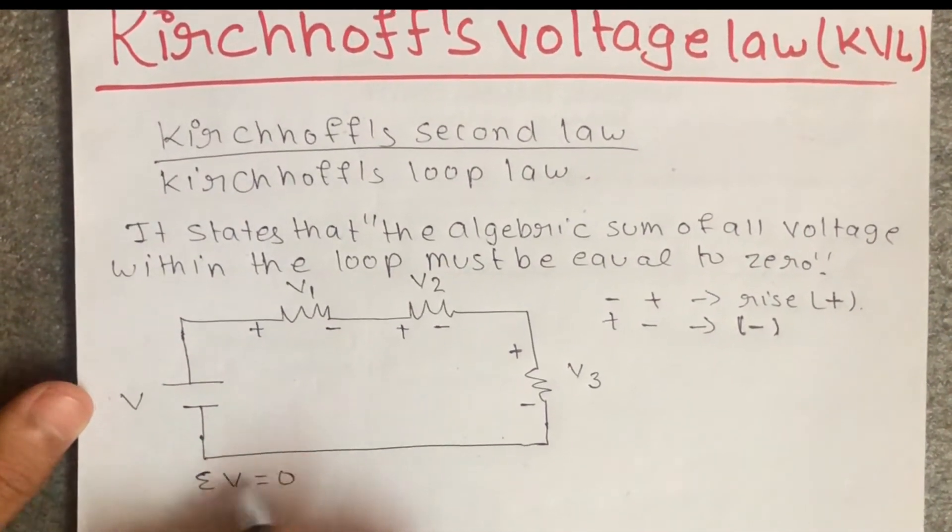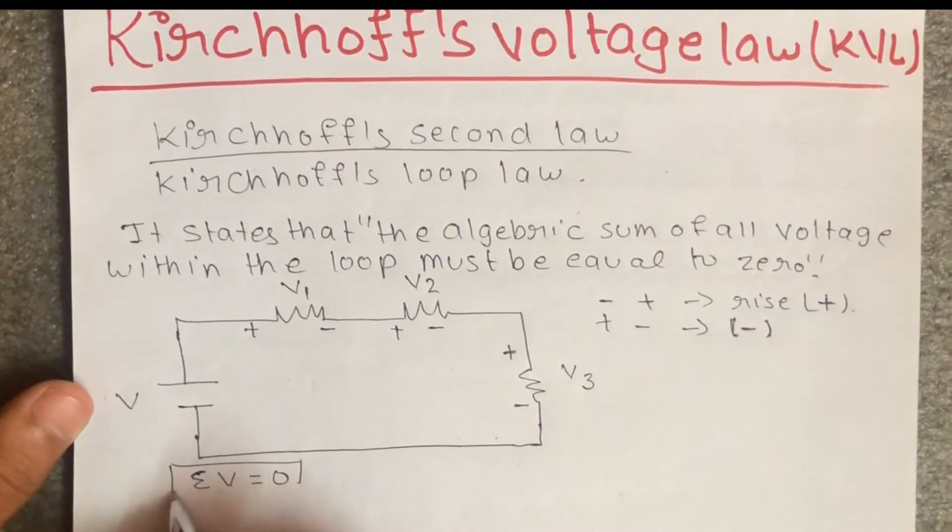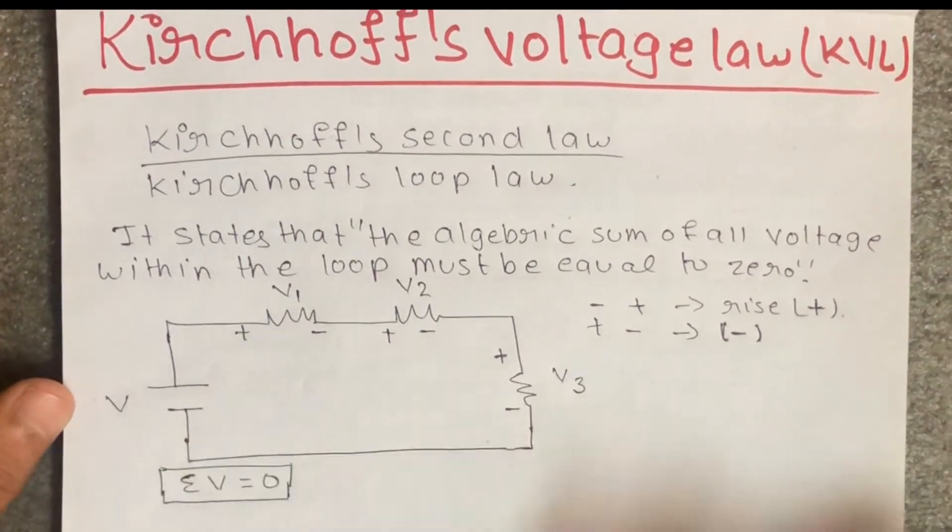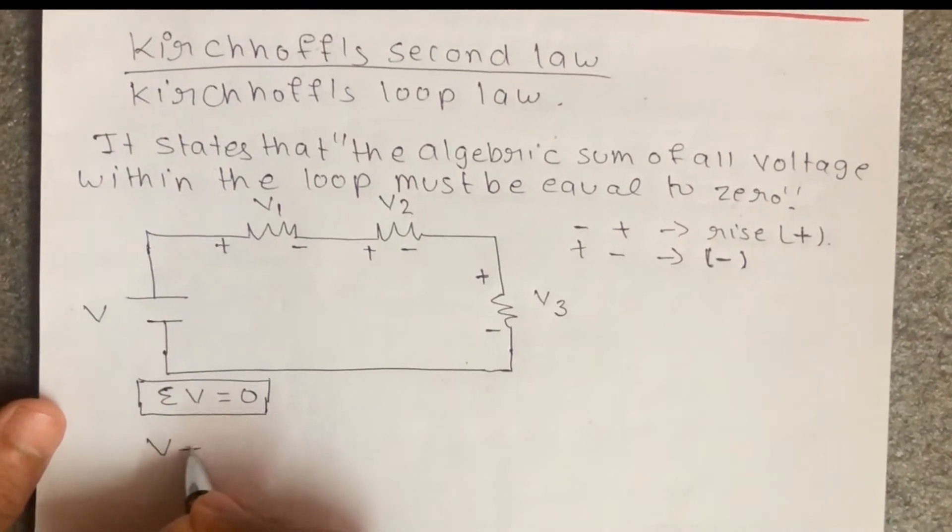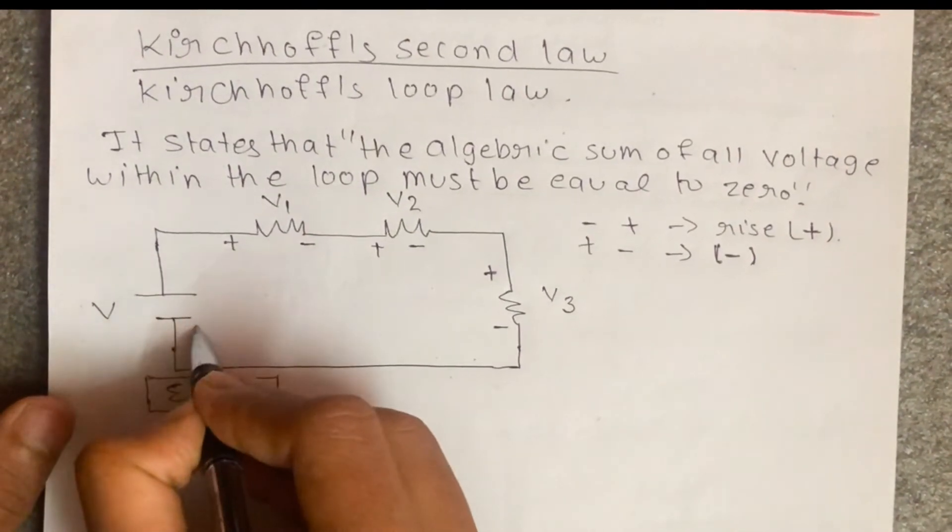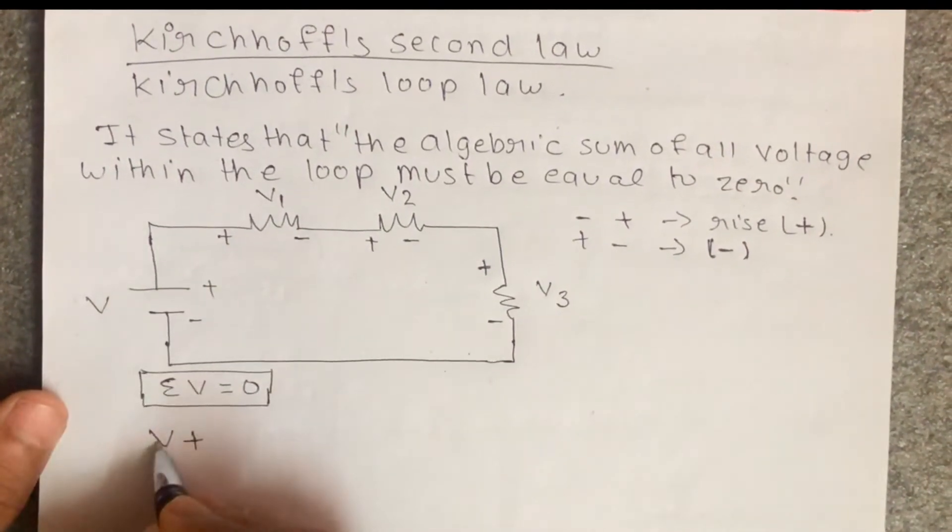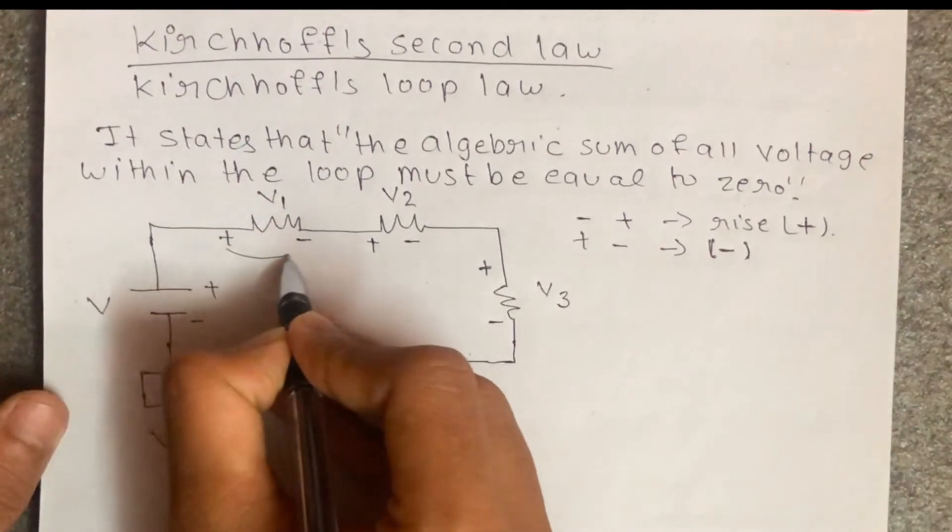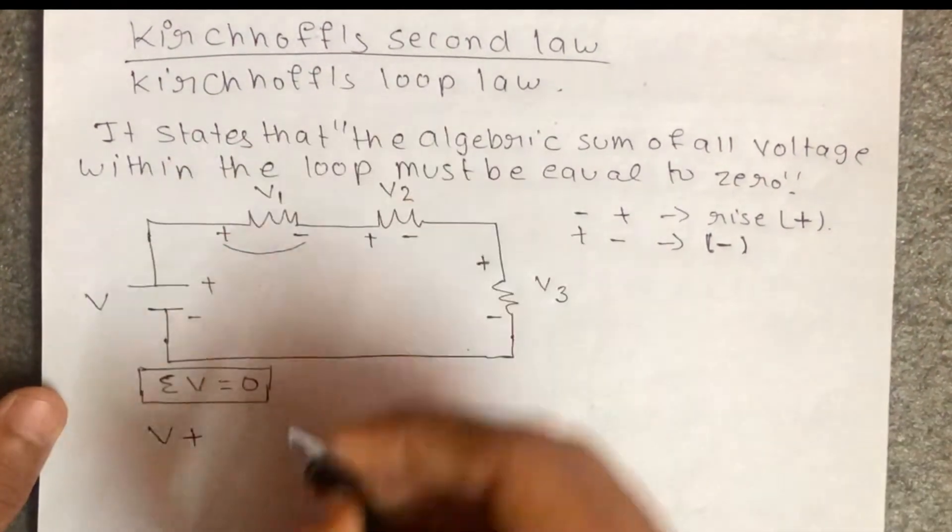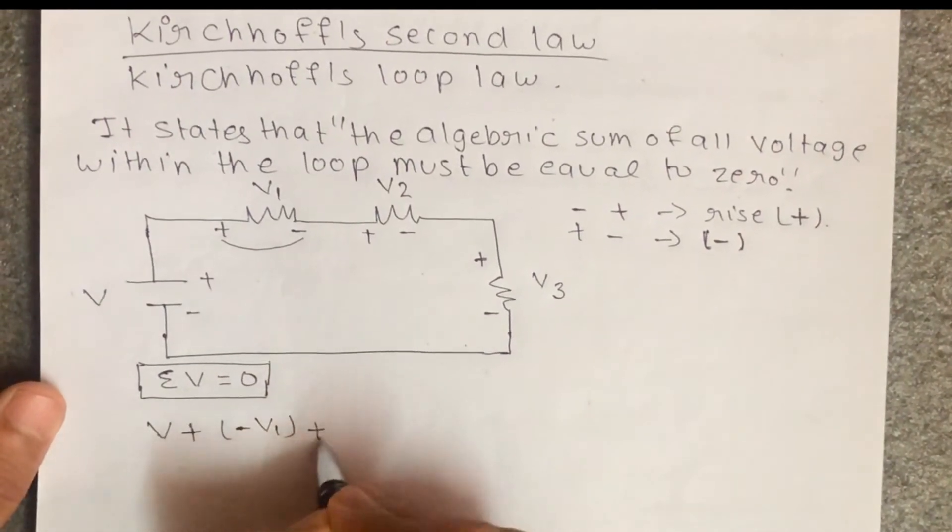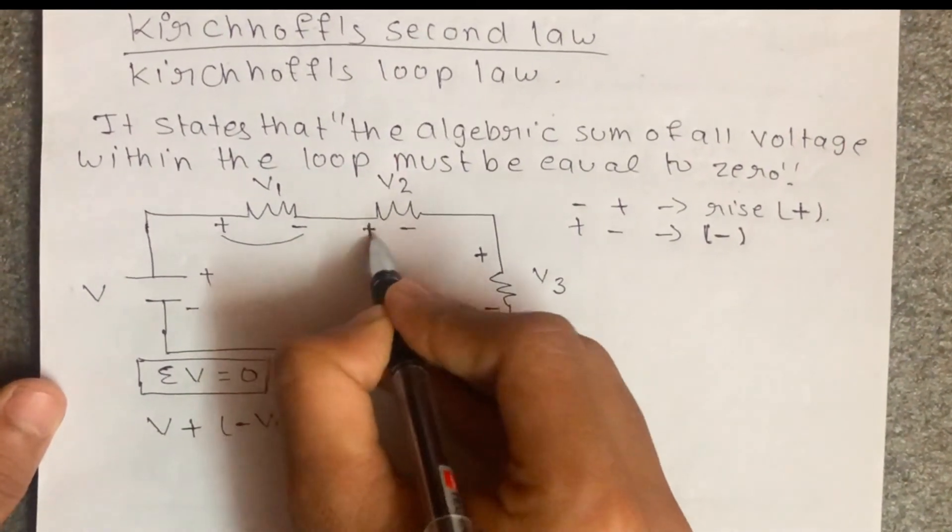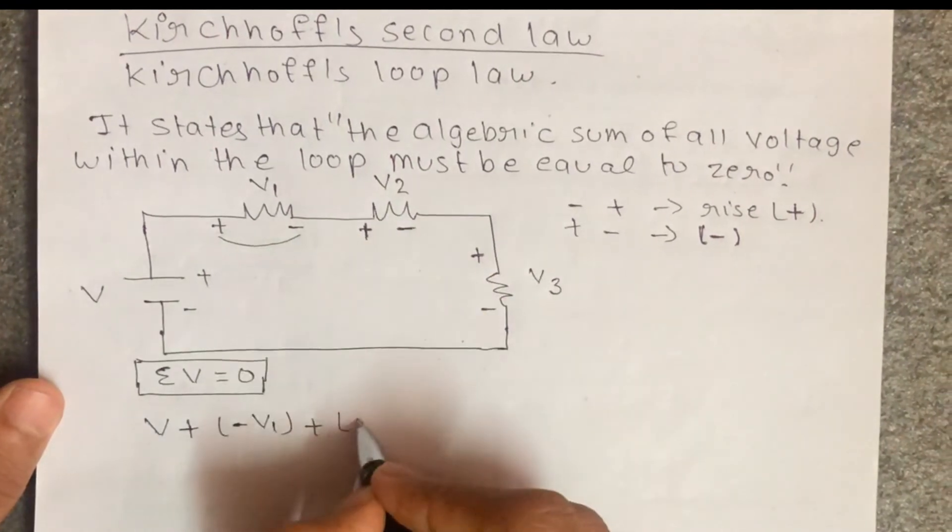The sum of voltage equal to zero. V plus negative to positive, that's a rising voltage which is positive. Negative to positive, that's minus V1. Plus the voltage positive and negative, we'll get minus V2.